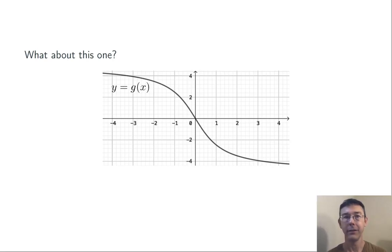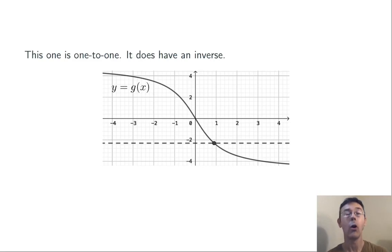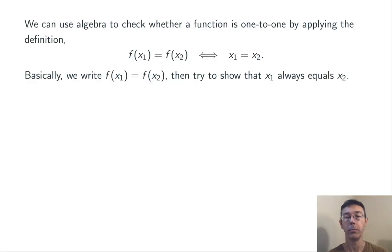On the other hand, this graph is one-to-one and does have an inverse. Any horizontal line we could draw only touches the graph at most once.